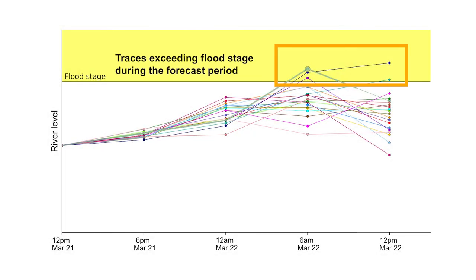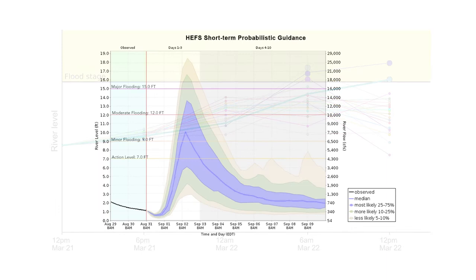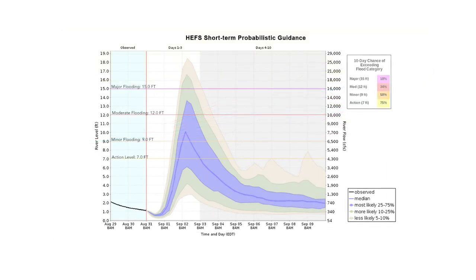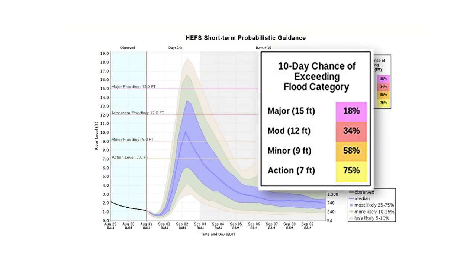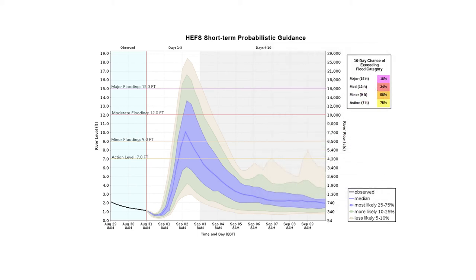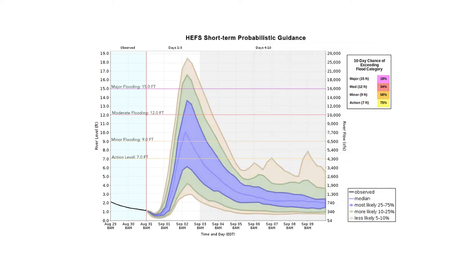Recall from our conceptual example that we can also extract the probability of exceeding a flood category over the entire period. This is represented in the HEFS short-term guidance as the 10-day chance of exceeding flood categories. Keep in mind that this is in contrast to the probability bands and exceedance probabilities, which are for a specific time.